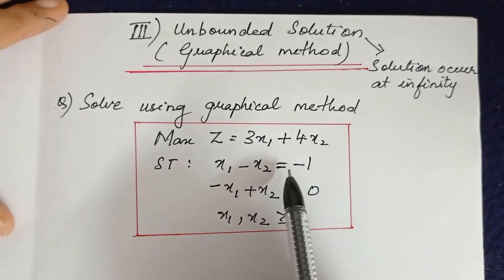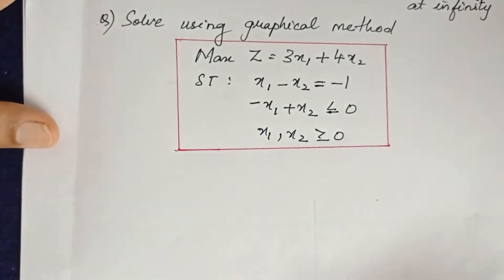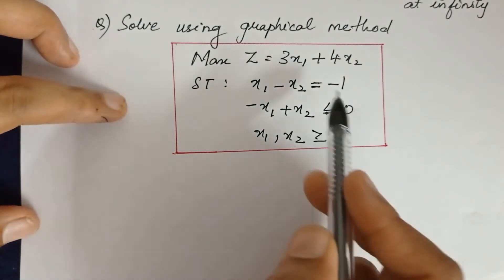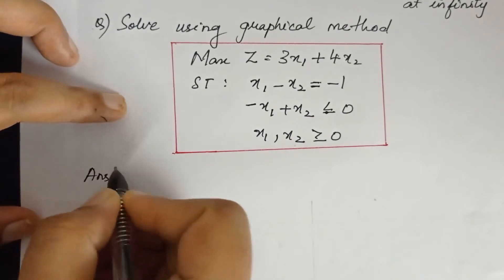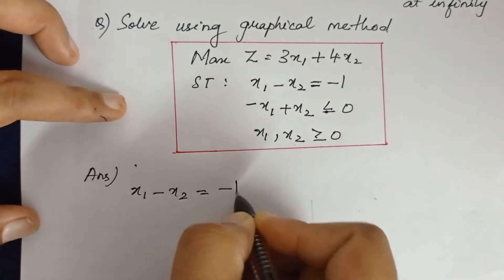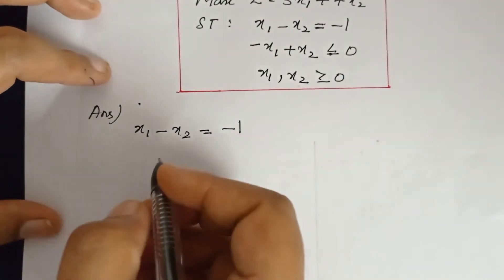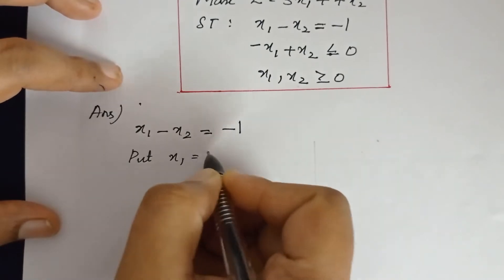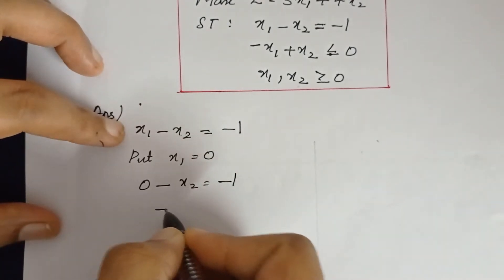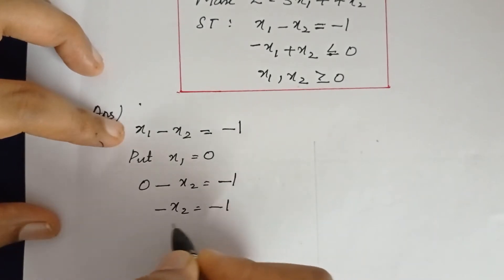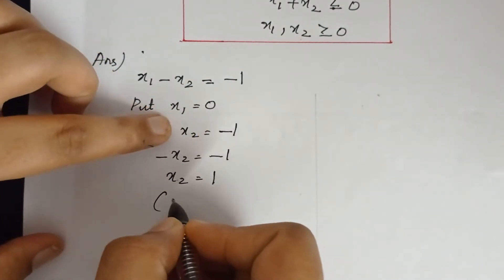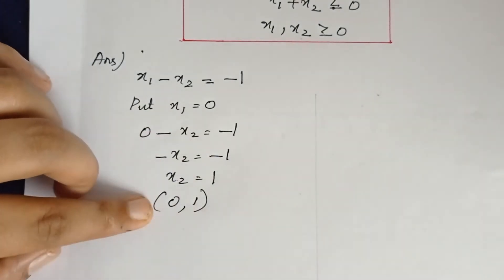The first constraint x1 - x2 = -1 is already an equation, so we don't need to change it. We will find two points to draw the line on the graph. Put x1 = 0: we get 0 - x2 = -1, so x2 = 1. The first point is (0, 1).